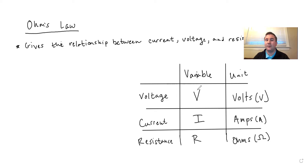So voltage, we use a V to represent it, the unit is volts. Current, we use an I to represent it, its unit is amps. And resistance is R, and its unit is ohms. So Ohm's law gives us the relationship between these three, and it's really, it's actually pretty straightforward.